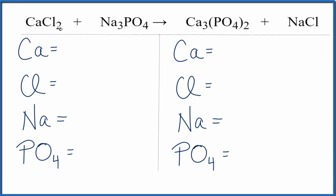In this equation, we have calcium chloride, and we're adding it to sodium phosphate in a double displacement reaction. Let's count the atoms up.